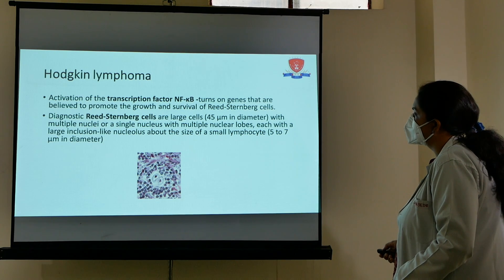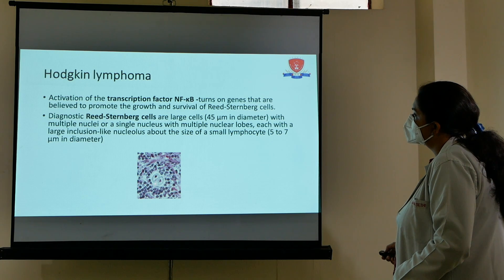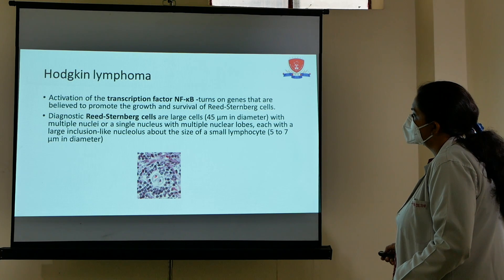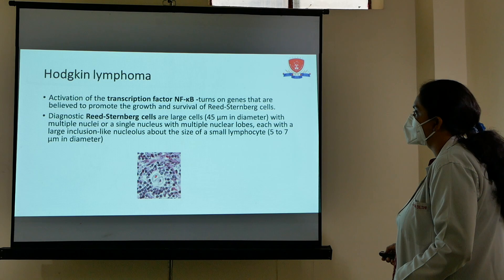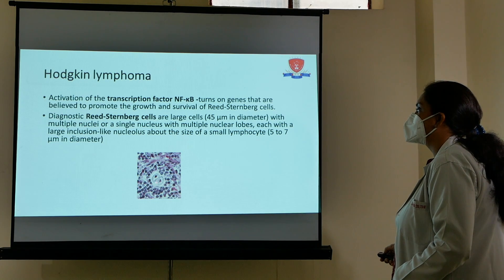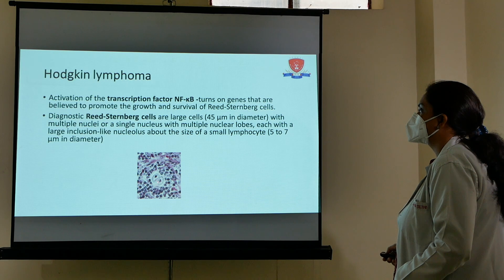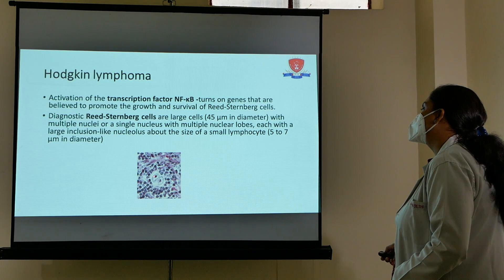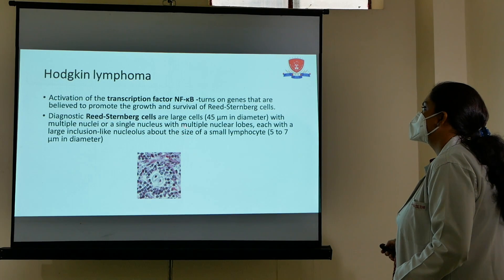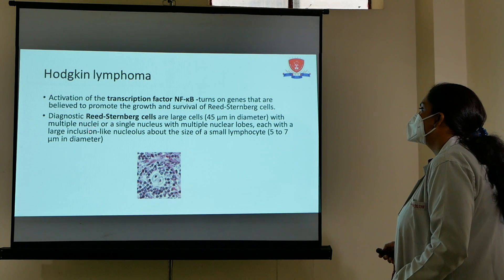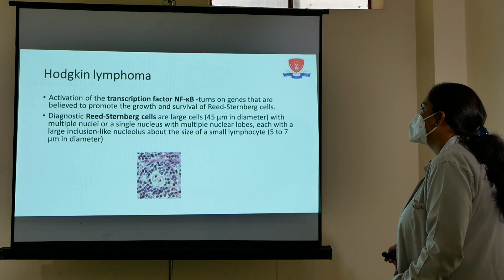In the histopathological view, you can see a large cell with two nuclei. Identify the cell membrane, the pale-colored cytoplasm, and two nuclei, each containing a large prominent eosinophilic nucleolus — the nucleus appears empty around the nucleolus. These are called owl's eye nuclei — two mirror images of each other. RS cells are 45 micrometers in size with single or bilobed nuclei and a large inclusion-like eosinophilic nucleolus.